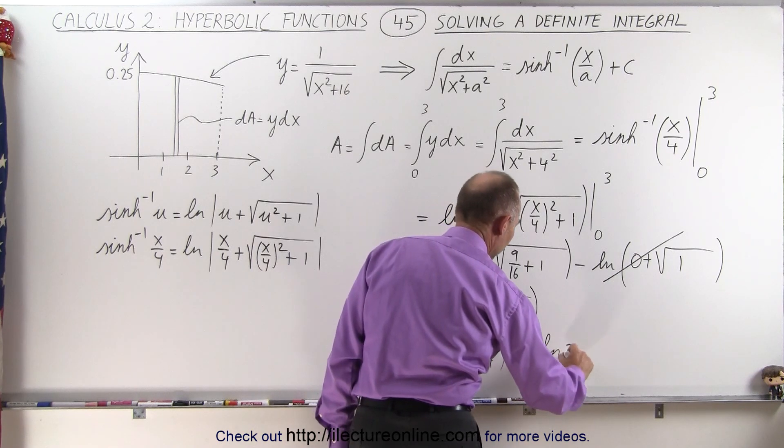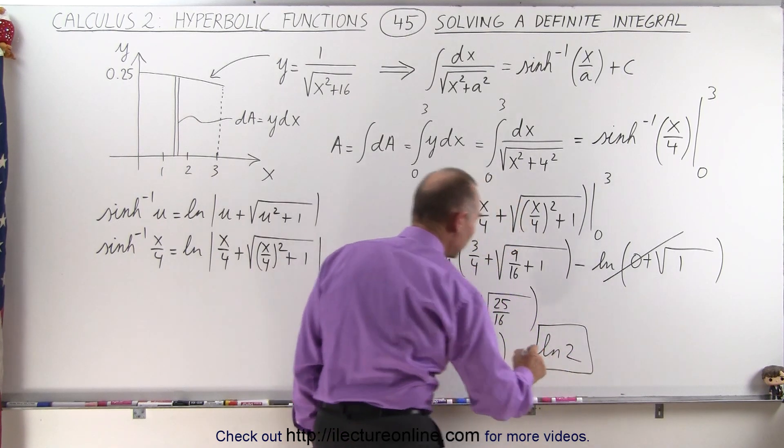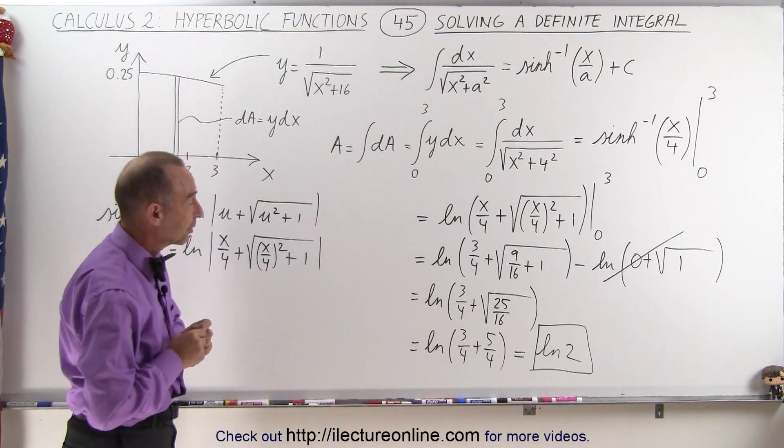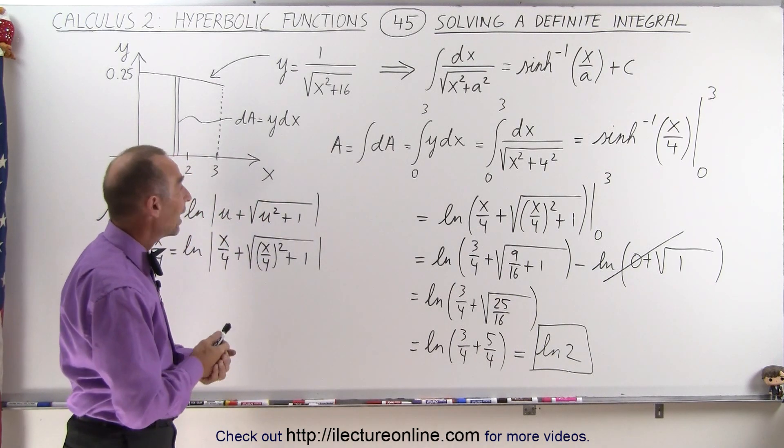So this becomes equal to the natural log of 2. And that would then be the area underneath that curve from x equals 0 to x equals 3.